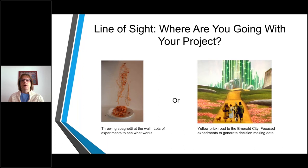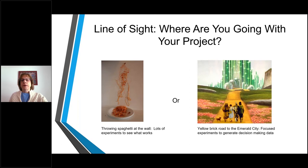There are two ways you can look at your project. You can throw a lot of spaghetti at the wall — meaning you do many experiments and just see what works. Or you can be focused on a great goal like getting to the Emerald City by the yellow brick road, doing focused experiments that generate decision-making data. Obviously, we all want to get to the Emerald City, so hopefully we'll help you stay focused and know where you're going.